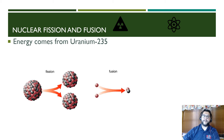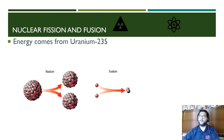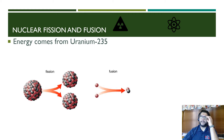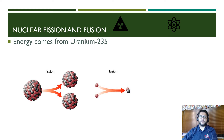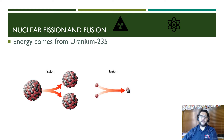With uranium-235, we typically practice fission when it comes to nuclear energy. The other option is fusion, where you combine two hydrogens to make a helium, but the energy required is just too much for fusion to be a usable form of energy right now. So we concentrate on fission, which is splitting really large atoms like U-235, but that ends up having consequences like nuclear waste, which we'll be talking about shortly.